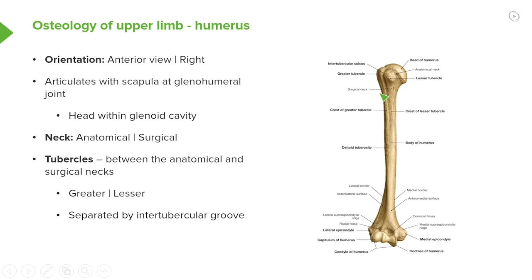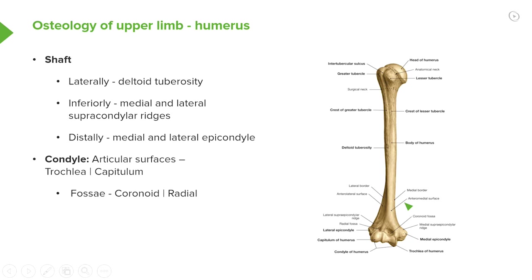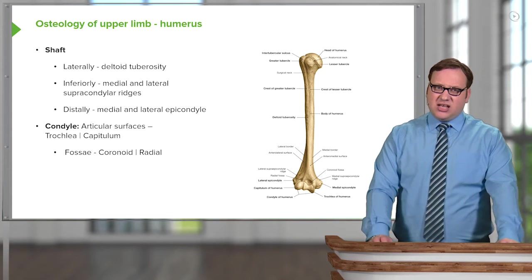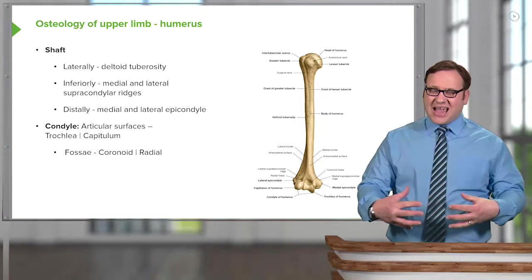Moving down on this anterior surface to the shaft of the humerus, we can see the crest of the lesser tubercle continuing distally, and another crest coming down from the greater tubercle, still forming the intertubercular sulcus onto the shaft. On the more distal aspect, as the humerus tapers towards the elbow joint, we have the medial and lateral supracondylar ridges, formed as the humerus begins to dilate distally.